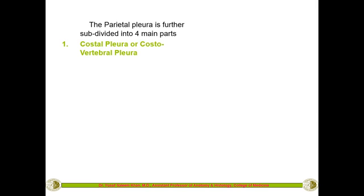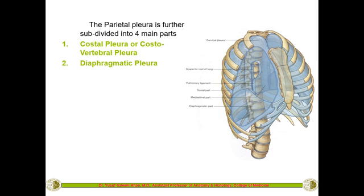The parietal pleura is further divided into four main parts. The part at the neck is called the cervical pleura. The part in contact with the chest wall is called the costal pleura, because it is in contact with the costa (ribs). Posteriorly it is also in contact with the vertebra, so it is also called the costo-vertebral pleura.